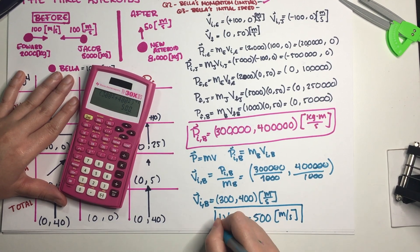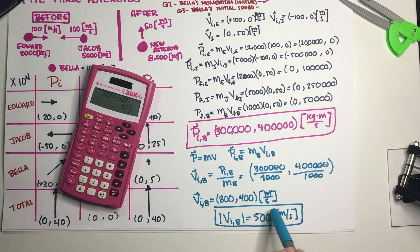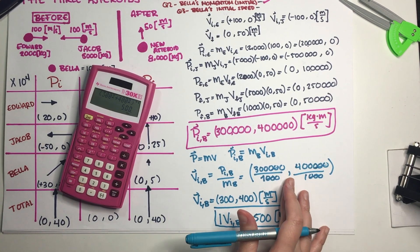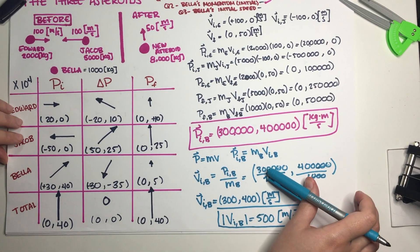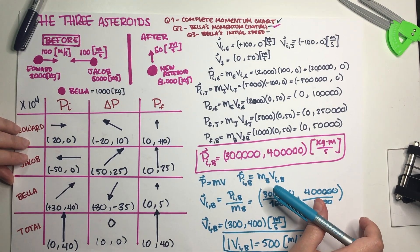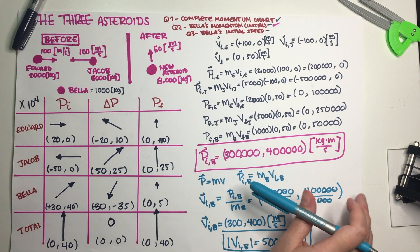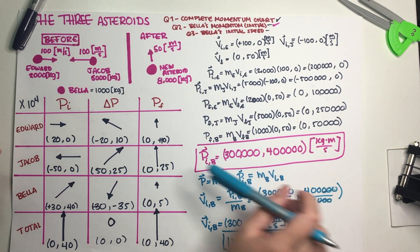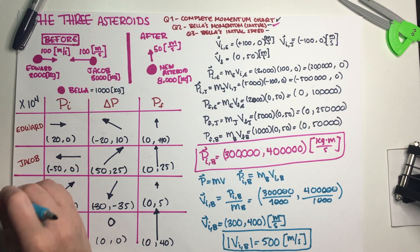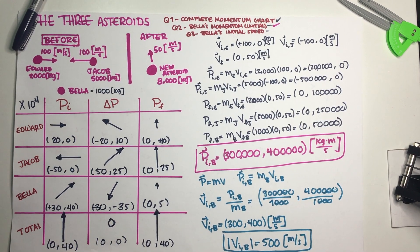The final answer is 500 m/s. The problem asked for speed, not velocity, so we needed to use the Pythagorean theorem to get the magnitude. This basically solves the entire quiz. I hope this was useful — if it was, hit the like button; it's the only way we know these videos are helpful. I'll see you in the next video, bye-bye!